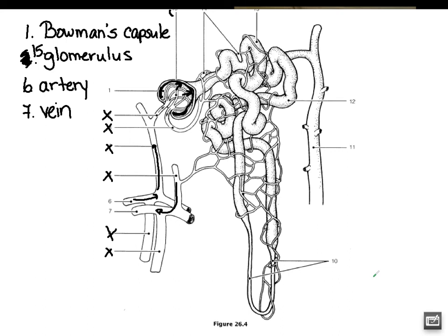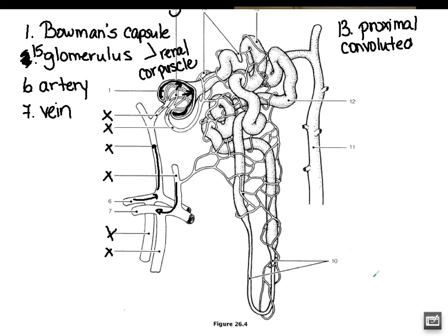So we have number 15 as the glomerulus. The blood gets filtered here at the glomerulus and the Bowman's capsule, and the combination of these two is the renal corpuscle. The urine then starts traveling through the tubing. The first tube it hits is number 13 — the proximal convoluted tubule. Proximal refers to the distance from the renal corpuscle, so this is the near end of the tube closest to the renal corpuscle.